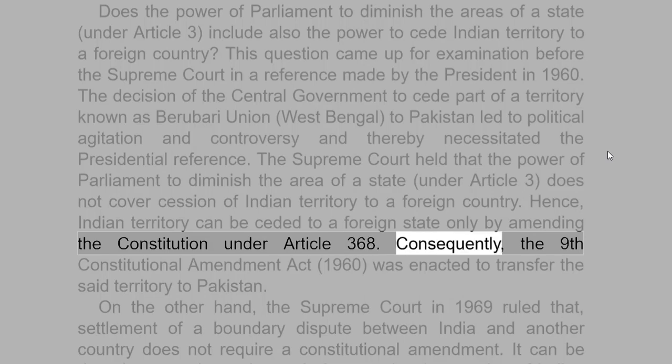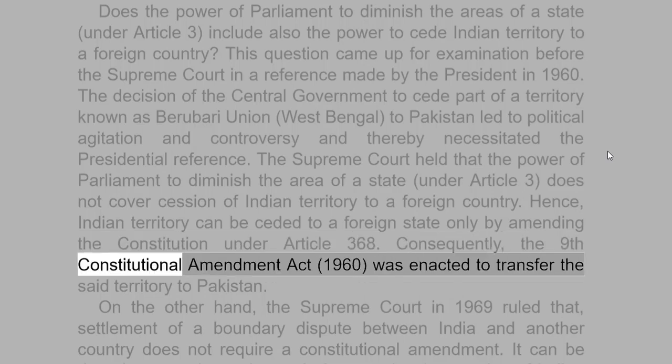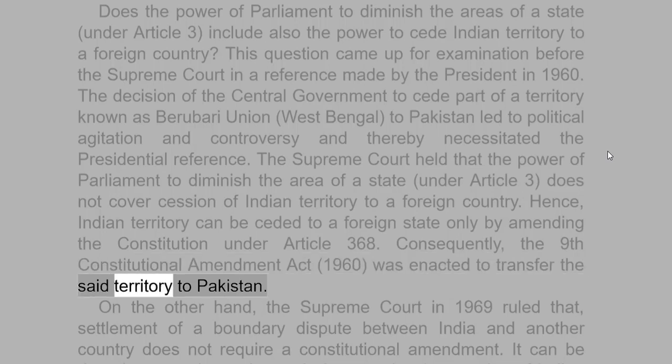The decision of the central government to cede part of a territory known as Berubari Union, West Bengal, to Pakistan led to political agitation and controversy and thereby necessitated the presidential reference. The Supreme Court held that the power of Parliament to diminish the area of a state under Article 3 does not cover cession of Indian territory to a foreign country. Hence, Indian territory can be ceded to a foreign state only by amending the Constitution under Article 368. Consequently, the Ninth Constitutional Amendment Act, 1960, was enacted to transfer the said territory to Pakistan.